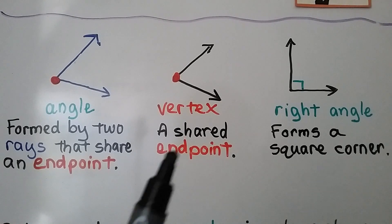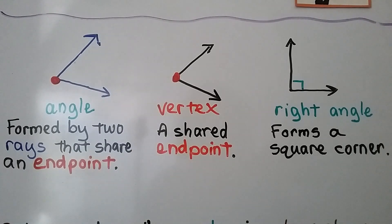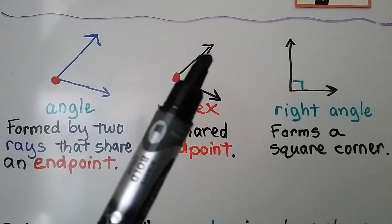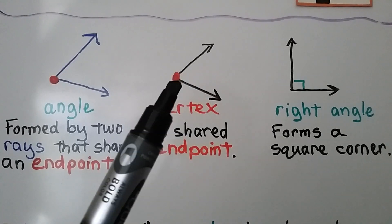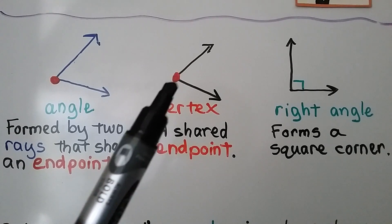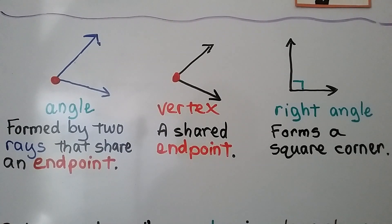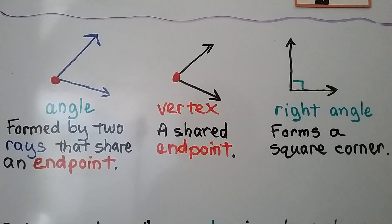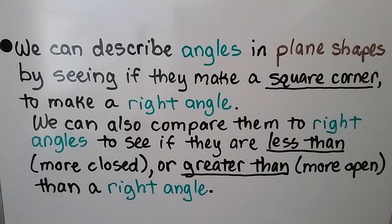A vertex right here — that's a shared endpoint. So where the two rays start, that's the vertex, and it's the endpoint. This is a right angle. It forms a square corner. We can describe angles in plane shapes by seeing if they make a square corner to make a right angle.